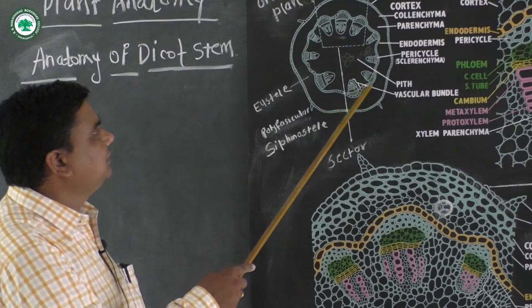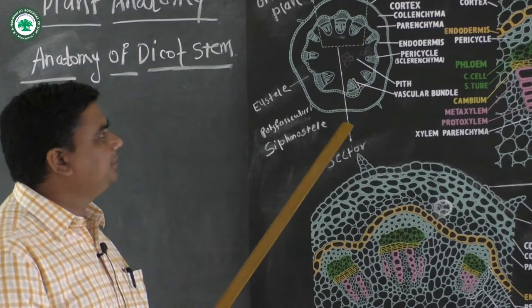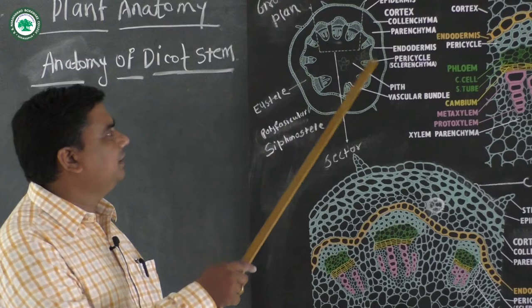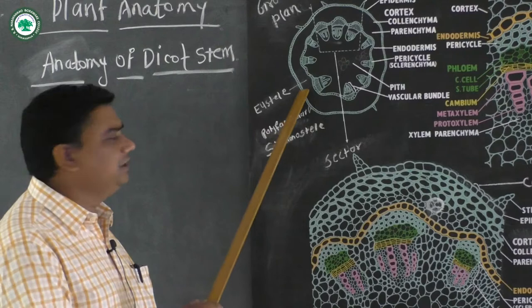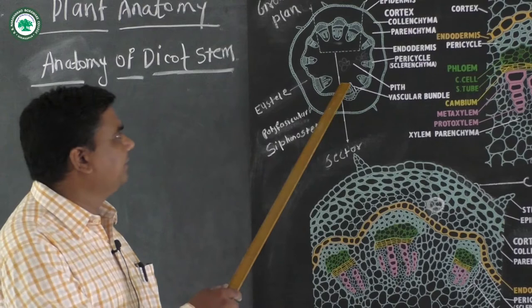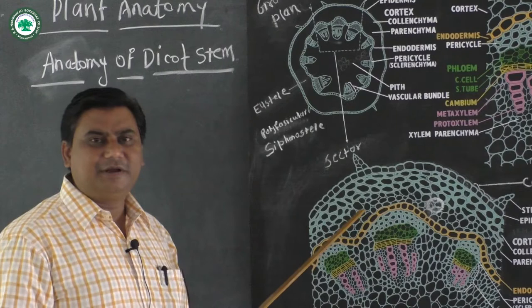The epidermis is a single layer, then the cortex is made up from collenchyma and parenchyma, then there is a single layer of endodermis, followed by a patch of the pericycle, and the vascular bundles are arranged in a ring manner. When vascular bundles are arranged in a ring manner, it is called a eustele, or in other terms a polyfascicular siphonostele. The vascular bundle consists of xylem and phloem, and in between xylem and phloem there is a cambium ring made up of two to three layers.